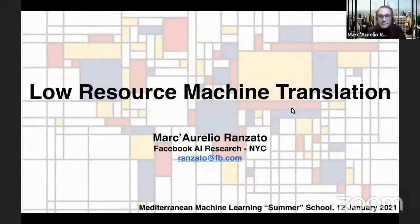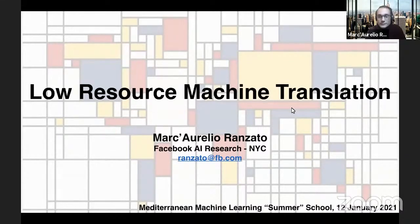He joined Geoffrey Hinton's lab as a postdoc, and after moving to industry he was one of the first members of the Google Brain team and a founding member of the Facebook AI Research Lab. Since then he has been interested in machine learning, computer vision, natural language processing, and more generally artificial intelligence. In particular, his focus has been on enabling machines to learn from weaker supervision and how to effectively transfer knowledge across tasks, possibly leveraging the compositional structure of natural signals. Today I'm excited to present his talk on low resource machine translation.